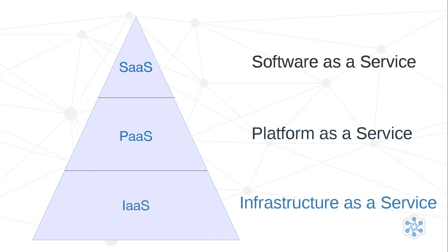IaaS, or Infrastructure as a Service, is the most basic service model. In this scenario, you have full control over your infrastructure, and you are provided with resources such as power supply, network connection, load balancers, firewalls, IP addresses, block/object storage, and so on. It's your job to build everything on top of that.